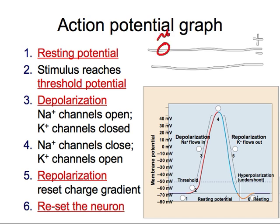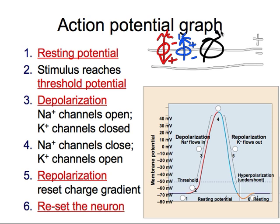Sodium goes in, so now we're positive on the inside and negative on the outside — that's depolarization. Then right behind that, the potassium channel opens and potassium goes out, repolarizing, so now we're positive on the outside and negative on the inside — that's the repolarization stage. Then we have to reset everything, so the sodium-potassium pump kicks sodium back out and potassium back in, keeping it negative on the inside and positive on the outside.